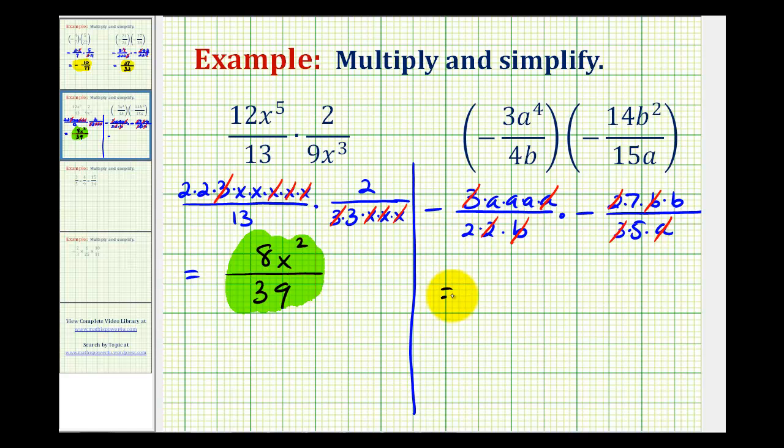So now we can multiply. And again, we know this product will be positive. And then we have one factor of seven, three factors of a, so we have a to the third. And then we also have one factor of b. And the denominator would be two times five, which is equal to ten.